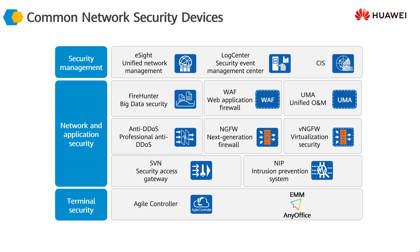The Network Intrusion Prevention System — Huawei's NIP 6000 series — is an older category of device that has been in the industry for a long time. It is very effective for protection against network intrusions based on signature matching. Similarly, the Secure Access Gateway — Huawei's SVN 5800 — is used as a gateway device for terminating remote users who access your network through GRE tunnels, IPsec tunnels, or SSL VPN tunnels, providing secure VPN access of any type.